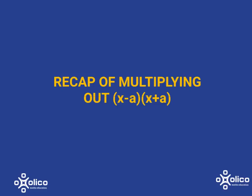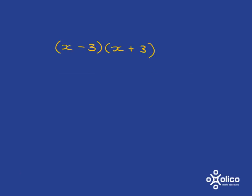We're going to do a quick recap of multiplying out things of the form x minus a, x plus a. So let's start with something simple, x minus 3 times x plus 3.